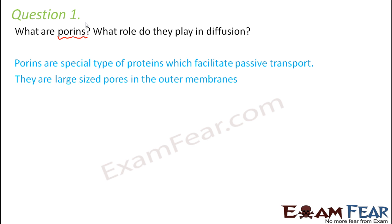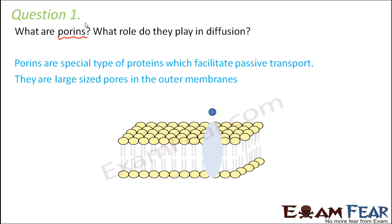Porins are large-sized pores present in the outer membranes. If this is your membrane, this is a porin with a pore — like a huge channel. A particle that needs to pass across the membrane enters the pore, the porin rotates itself, and releases it on the other side. They transport substances that cannot cross the membrane by themselves because membranes have a hydrophobic region, and some materials are hydrophilic in nature.